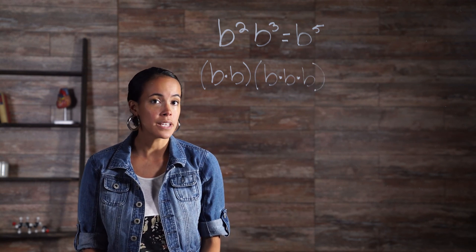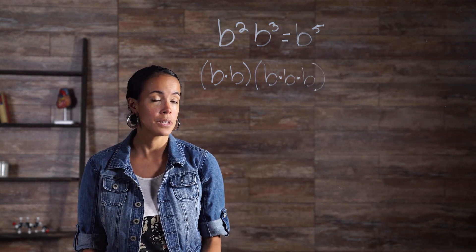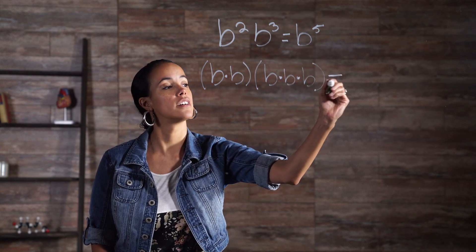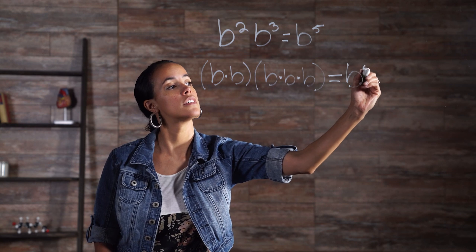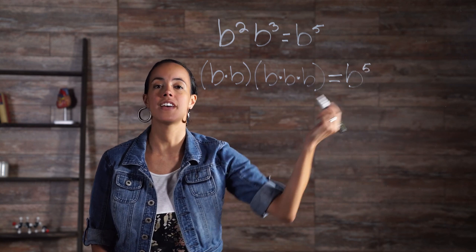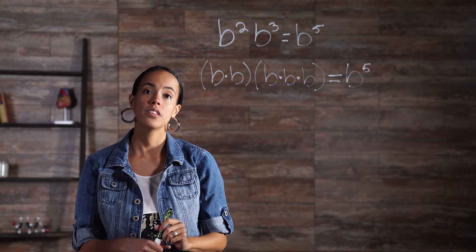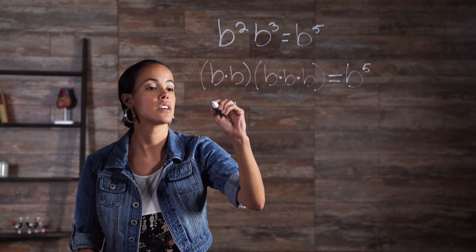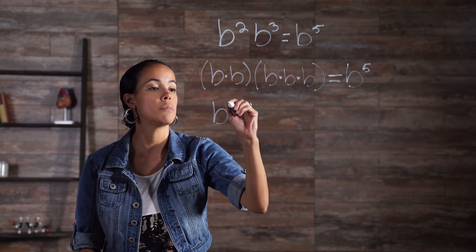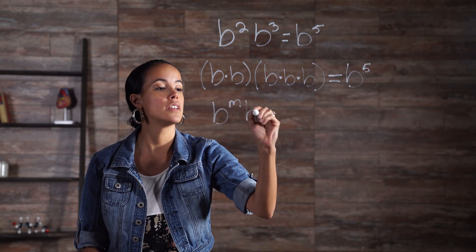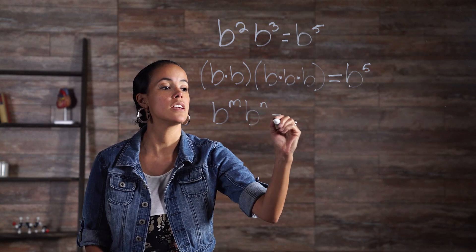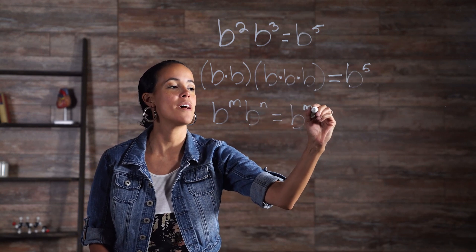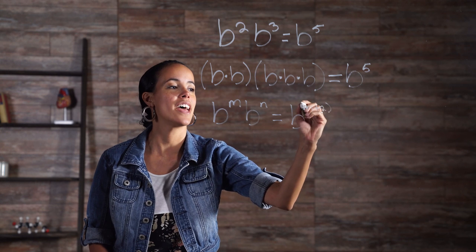Counting up the bases of b that are being multiplied results in 1, 2, 3, 4, 5 — b to the fifth. Therefore, the general form of the product of powers rule is b to the m times b to the n equals b to the m plus n.